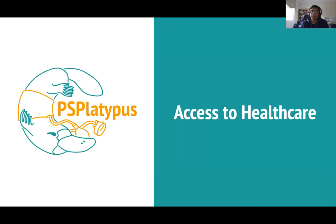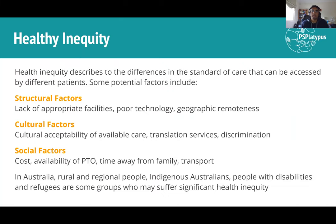Next topic: access to healthcare (HKS). Health inequity arises from structural, cultural, and social factors. Structural factors are major in developing countries that lack resources for good healthcare. In Australia, vulnerable groups include rural populations and Indigenous Australians. The goal is to increase health access to these groups as much as possible.